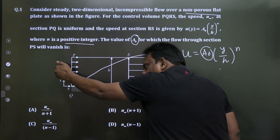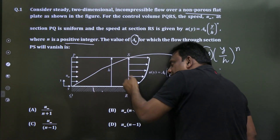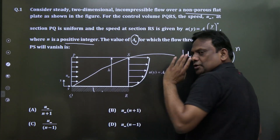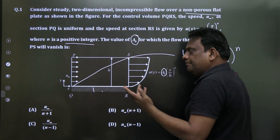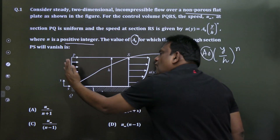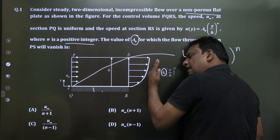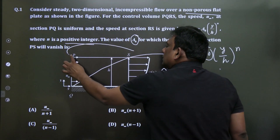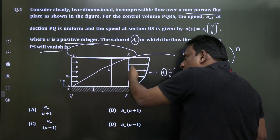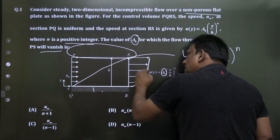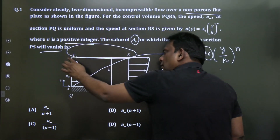If 10 units are entering and 8 are leaving due to boundary layer growth, the remaining 2 should leave through PS because it is non-porous. But the question asks for the value of a₀ so that the flow through PS vanishes — meaning whatever is entering, everything should leave through RS. There should be no mass flow rate through PS.